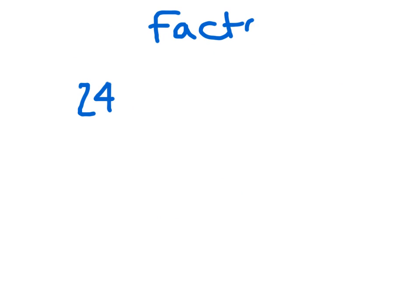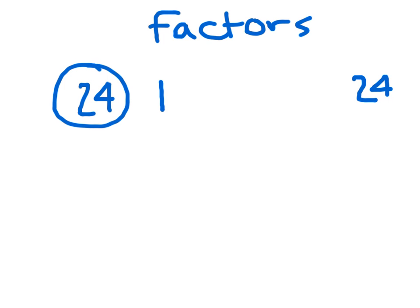Let me show you another way to figure out the factors of a number — 24. For the factors, 1 and the number itself are always factors. So 1 goes with 24. We're going to list our factors in order. Next I'll go from 1 to 2. Is 24 divisible by 2? Yes.